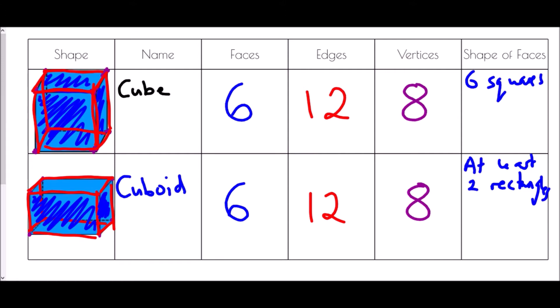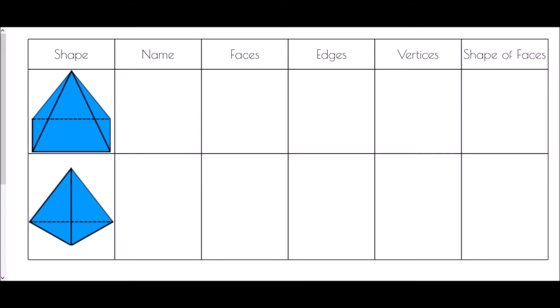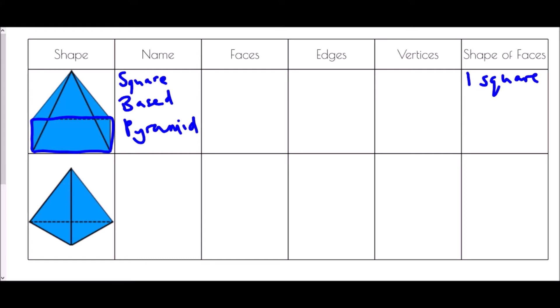The next shape is a pyramid, but it is a specific type of pyramid — it comes from the shape of the base. If I look at the base, that is a square, and therefore this is known as a square-based pyramid. That tells us something about the shapes of the faces: it has one square base, and then the other faces are all triangles — there is a triangle at each side, so we have four triangles.